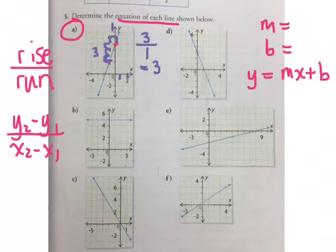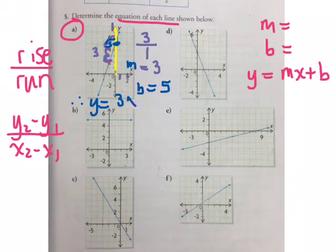Is this line positive or negative? It has a positive slope. Now we have to find the y-intercept. Just look at the graph - where does the line hit the y-axis? At five. So B equals five. I found that M equals three. Therefore, the equation of this line is y equals 3x plus 5.